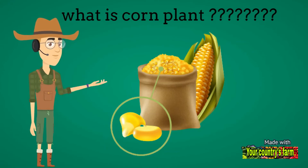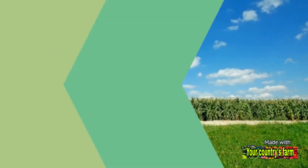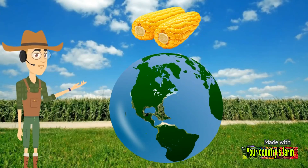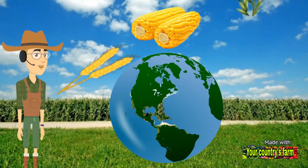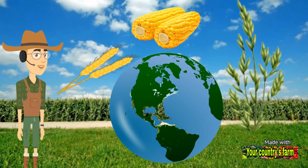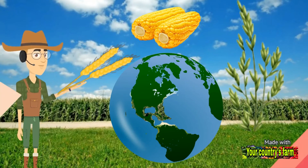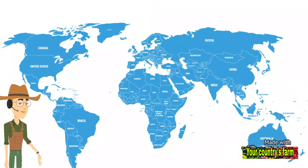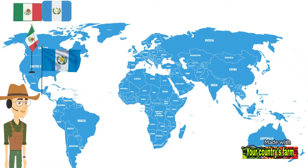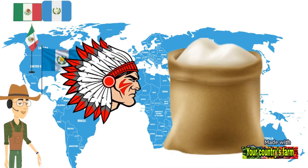What is the corn plant? Corn is a type of plant, and it is the third most important crop in the world after wheat and rice. Its original home is southern Mexico and Guatemala, and the Native Americans used it as a source of flour.